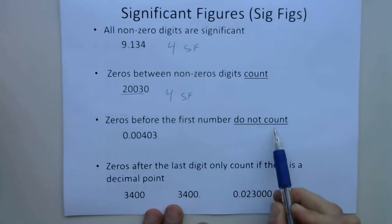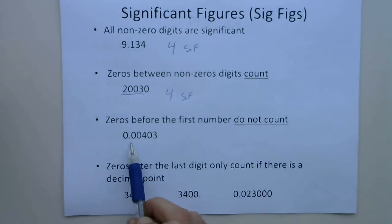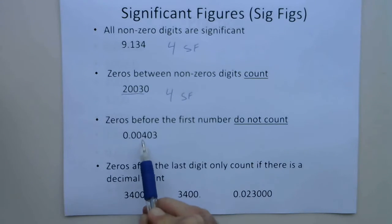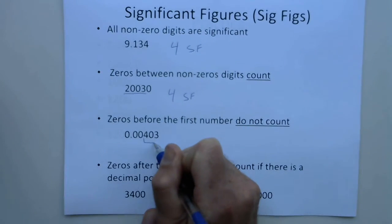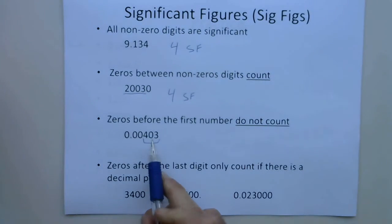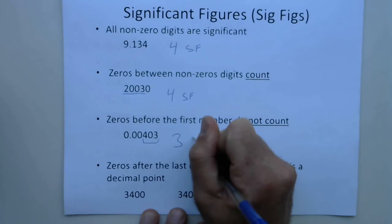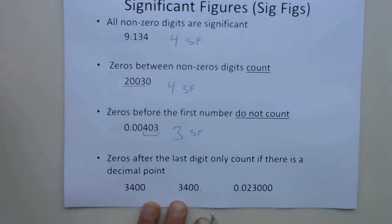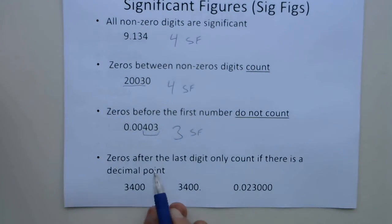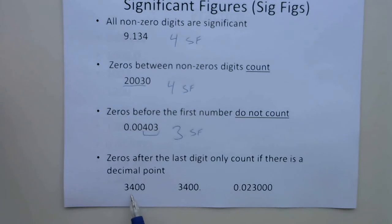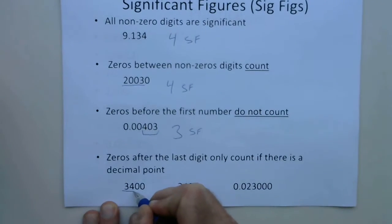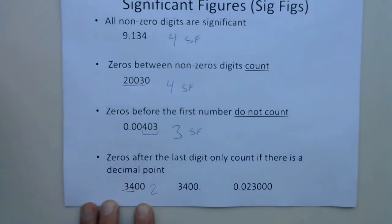Zeros before the first non-zero digit do not count — those zeros are just placeholders. They're not adding to the precision of the measurement. So in a number like 0.403, the four, the zero between non-zero digits, and the three all count — that zero is between two non-zero digits, which is why it counts — giving three significant figures. And the last rule: zeros after the last digit only count if there is a decimal point. So in 3,400 with no decimal point, only the three and the four are significant — that is two significant figures.